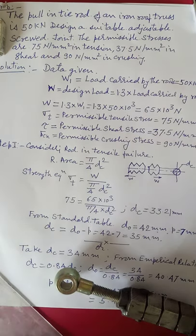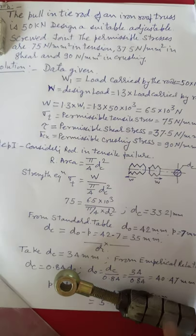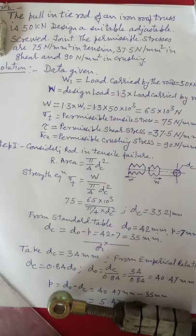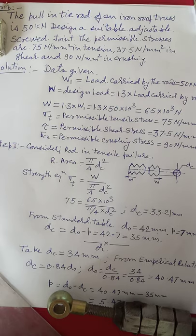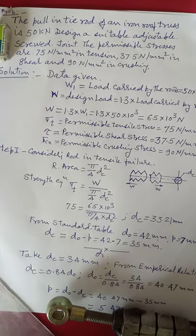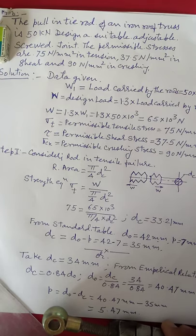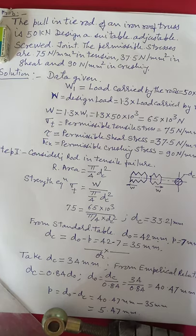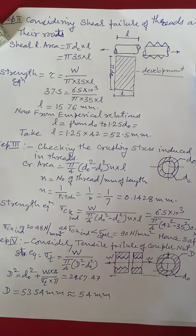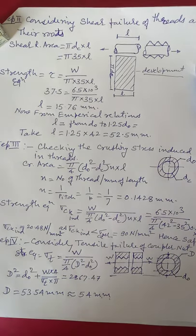Suppose in the examination the table is not available. In that case we calculate the outer diameter from the empirical relation dc = 0.842 · do. From this relation the outer diameter comes out to be 40.47 mm and pitch = do − dc = 5.47 mm. We will solve the problem taking values from the standard table.